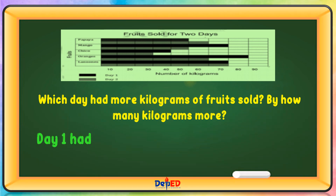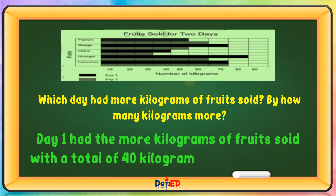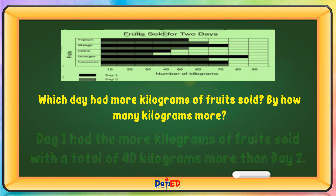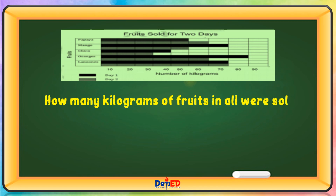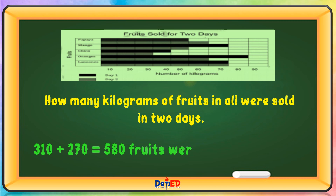Which day had more kilograms of fruits sold, and by how many kilograms more? Day 1 had more kilograms of fruits sold, with a total of 40 kilograms more than day 2. How many kilograms of fruits in all were sold in 2 days? 310 plus 270 equals 580 kilograms of fruits were sold in 2 days.